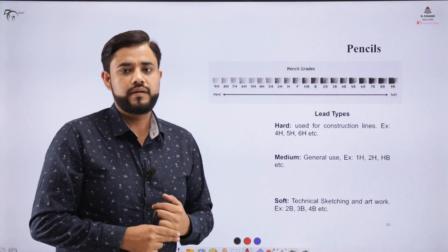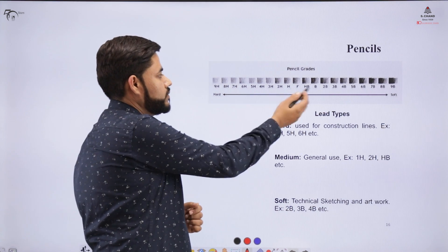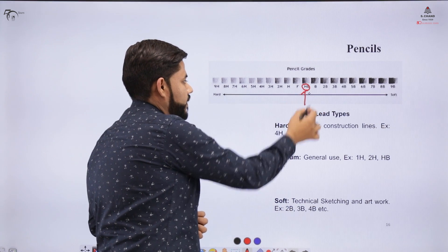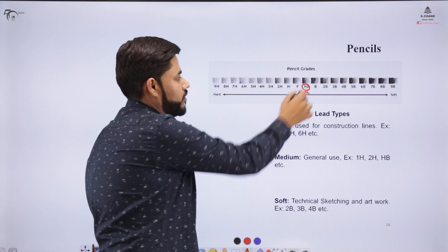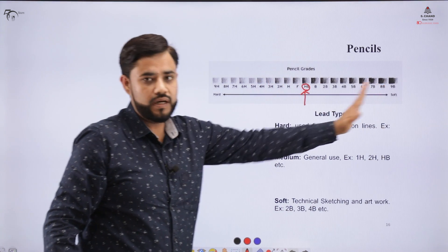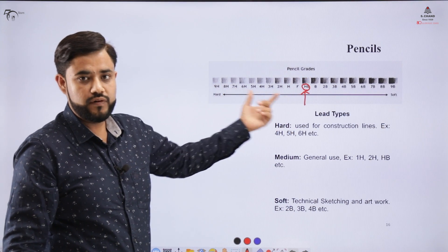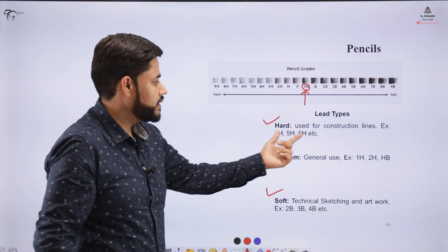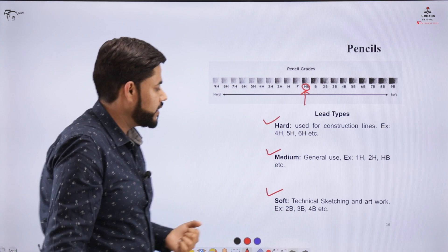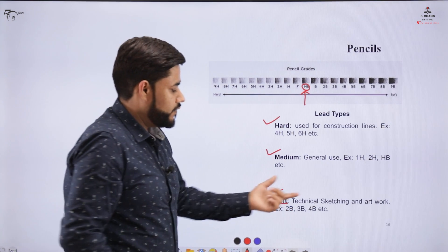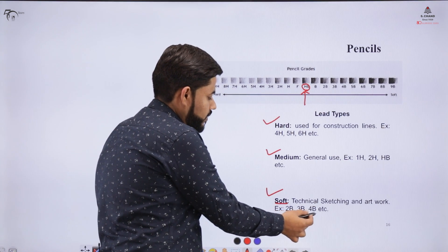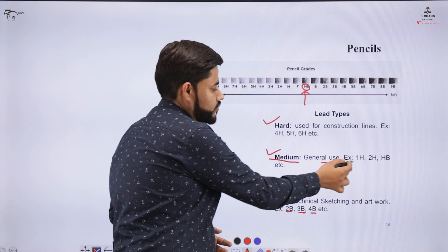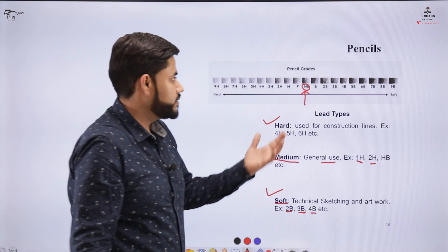The second thing is the pencil. As you can see on the board there are different shades of pencils. The HB pencil has a mediocre shade. When I go from HB to B part, the shade becomes darker and from HB to H part the shade becomes lighter. There are different types of leads: hard leads for construction lines like 4H, 5H or 6H pencils. Soft lead pencils give darker shade like 2B, 3B or 4B, specifically used for sketching or artworks. Medium lead type pencils for general use: 1H, 2H or HB pencils for general purposes in engineering drawing.